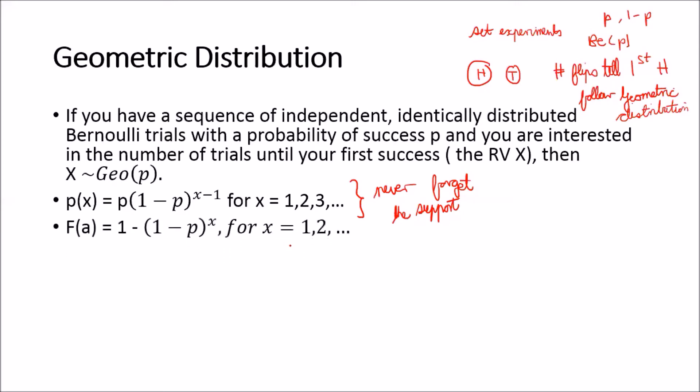The CDF is given by 1 minus (1 minus p) to the power of x and it also has the same support over here. The expected value of x is 1 over p.